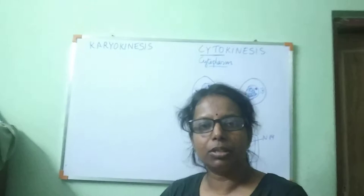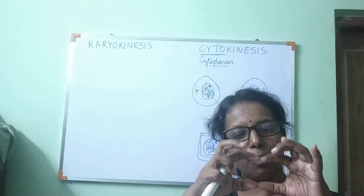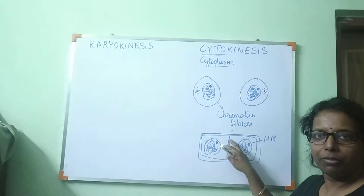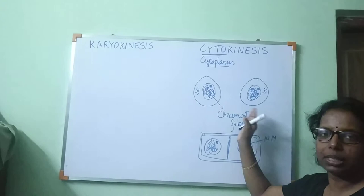Always remember one thing, which I also mentioned in the previous video: in animal cells, the furrowing starts from the periphery towards the center. But in the case of plant cells, the division or cell plate formation starts from the center towards the periphery. So this is called cytokinesis.